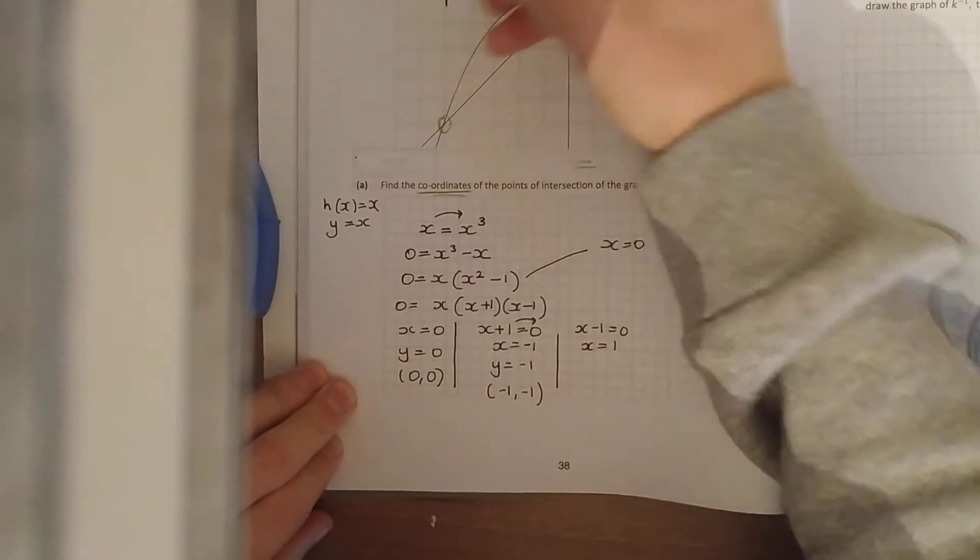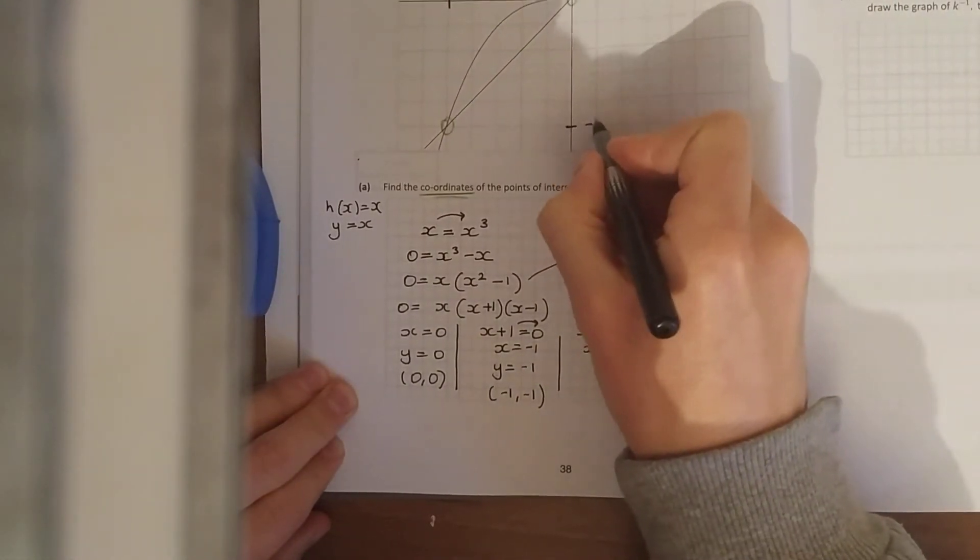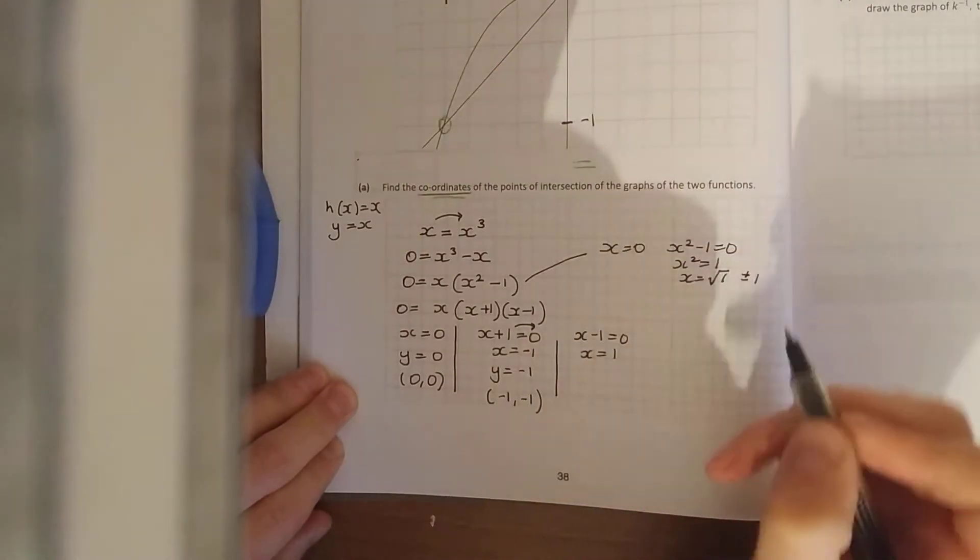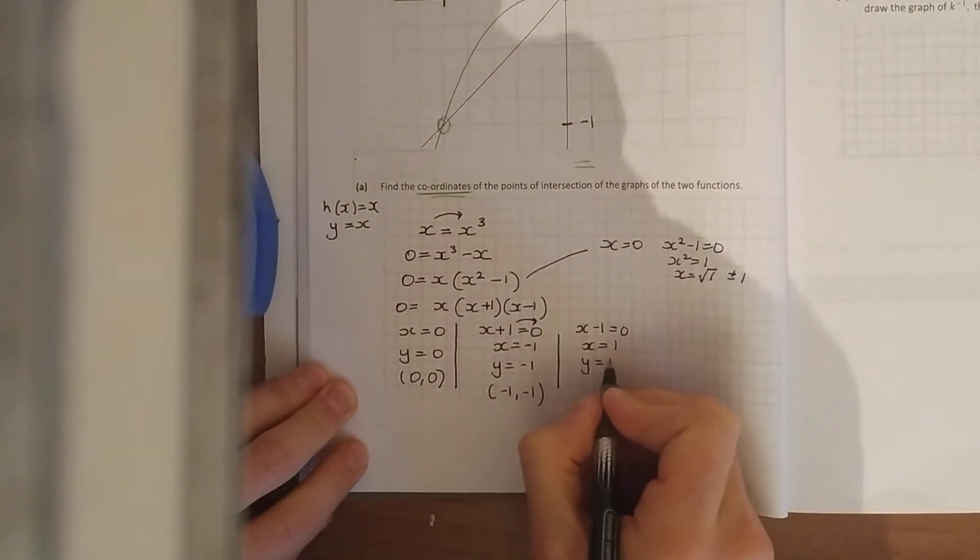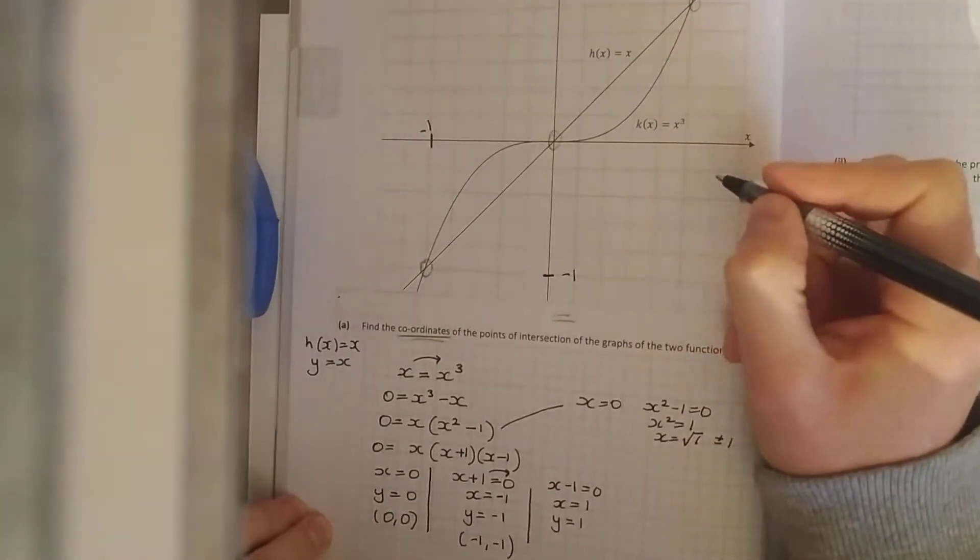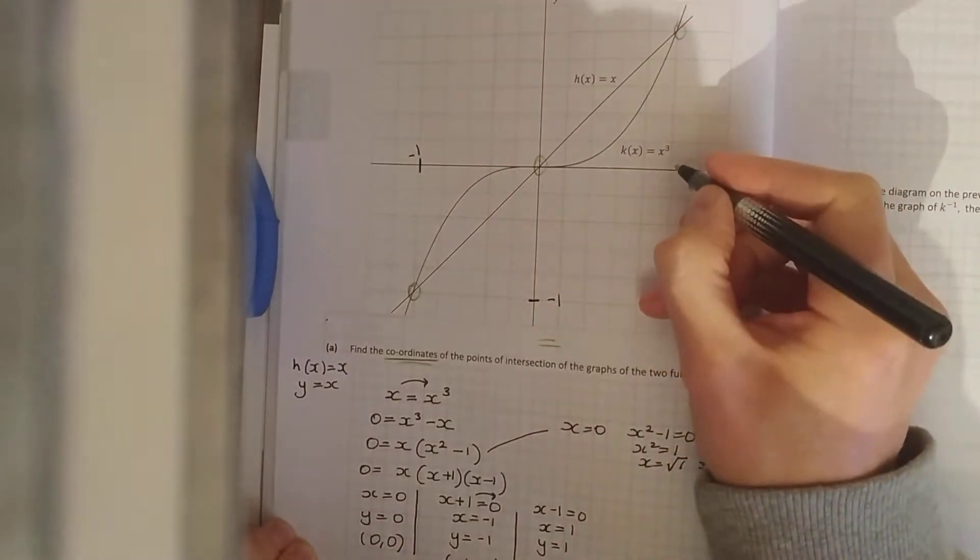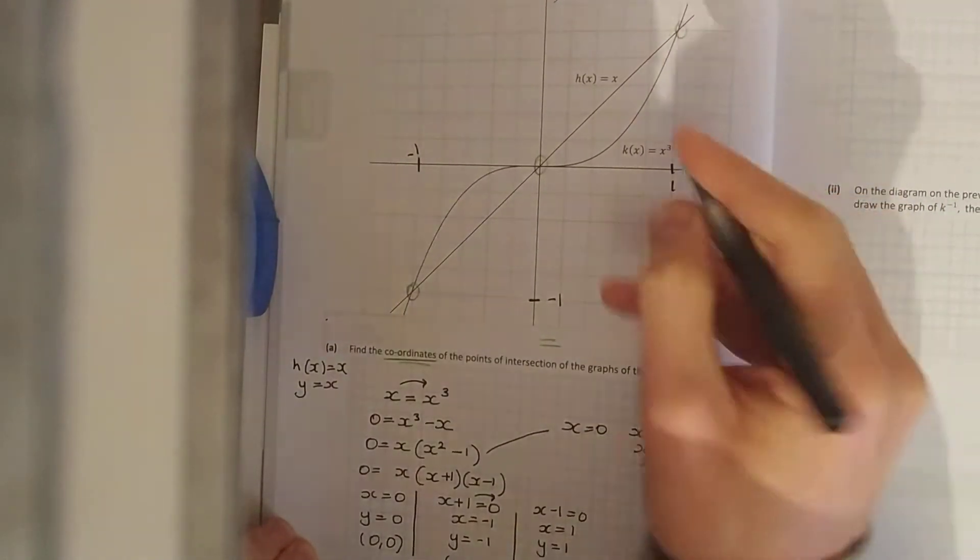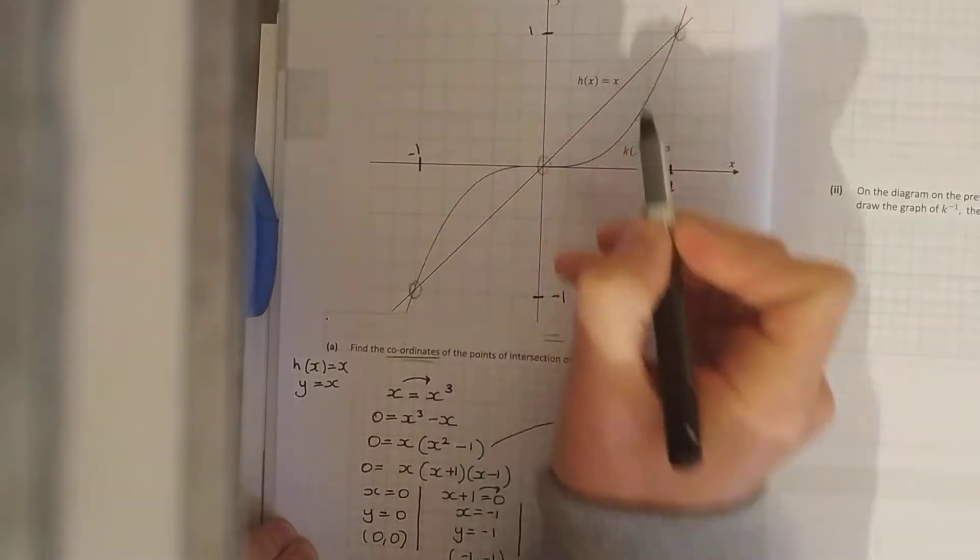So over here that must be -1, that must be -1 down. (-1,-1). And it's the same here: when x is 1, y is 1. So I'm going to look at that back in to the graph, there's 1 and 1.